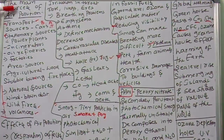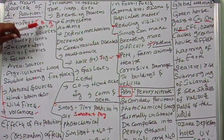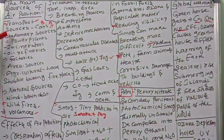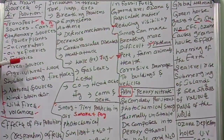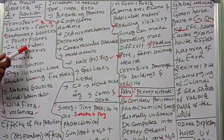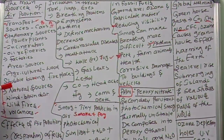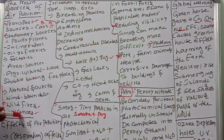To summarize: the major sources of air pollution are transport sources like cars, buses, automobiles, and trucks releasing dangerous pollutant gases; stationary sources like power plants, incinerators, oil refineries, and factories; area sources like agriculture, wood burning, stubble burning, and fireplaces; and natural sources like wind-blown dust, wildfires, and volcanoes, which also cause too much pollution.